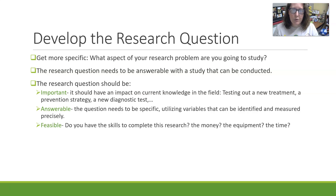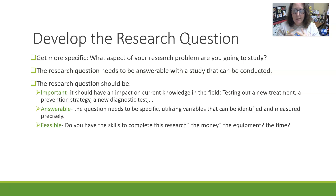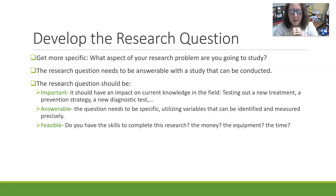As you develop the research question, you want to get more specific. What aspect of your research problem are you going to tackle and study? The question needs to be answerable with a study that can actually be conducted. The research question should be important and have an impact on current knowledge — you should be contributing something to the field, whether testing a new treatment, a new prevention strategy, or a new diagnostic test. The question needs to be answerable, so it needs to be specific with variables that can be identified and measured precisely. You also need to be able to measure an outcome in your study population, and consider whether you have the skills, money, time, or equipment to complete this research.